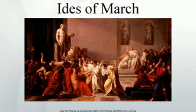In modern times, the Ides of March is best known as the date on which Julius Caesar was assassinated in 44 BC. Caesar was stabbed to death at a meeting of the Senate. As many as sixty conspirators, led by Brutus and Cassius, were involved.